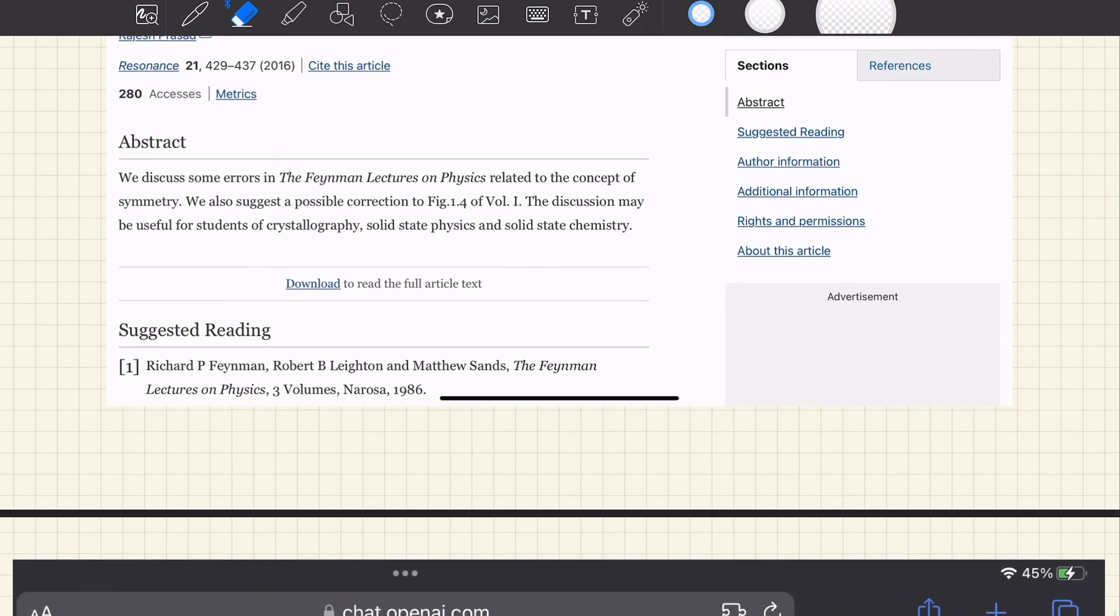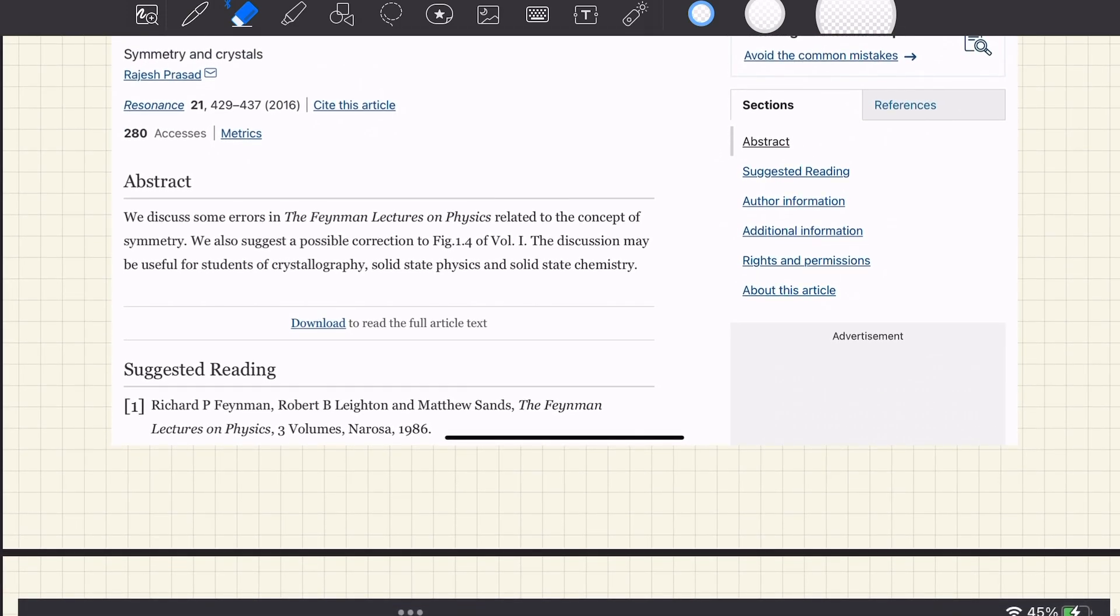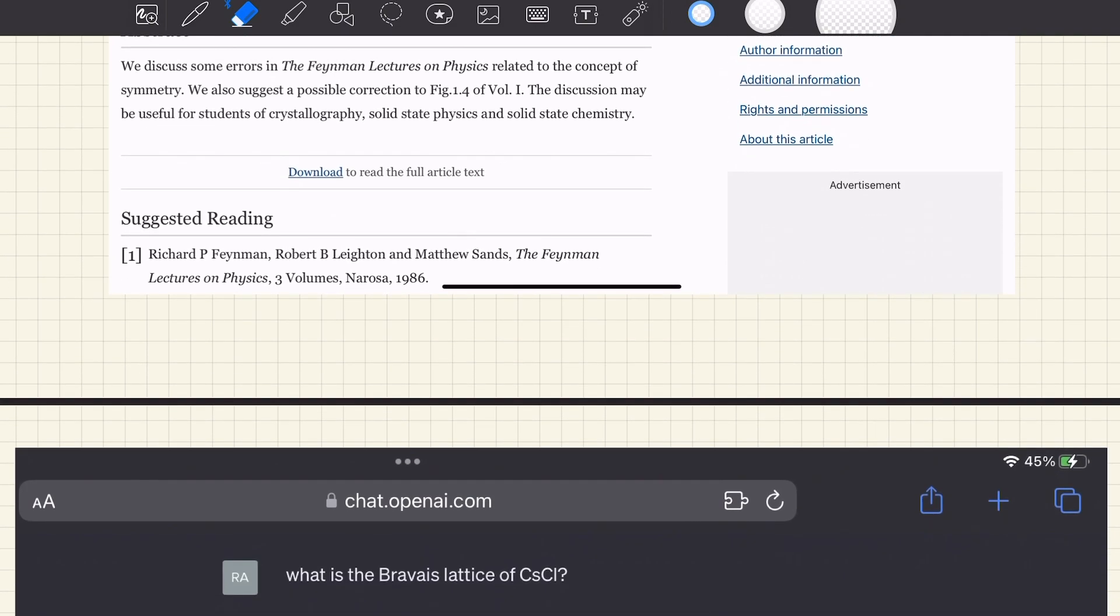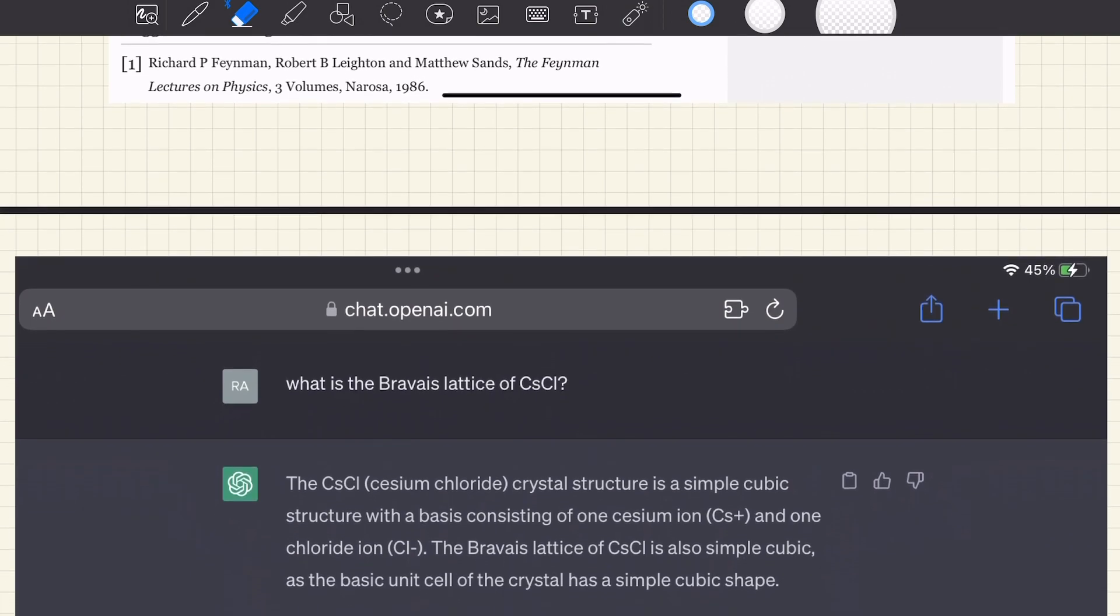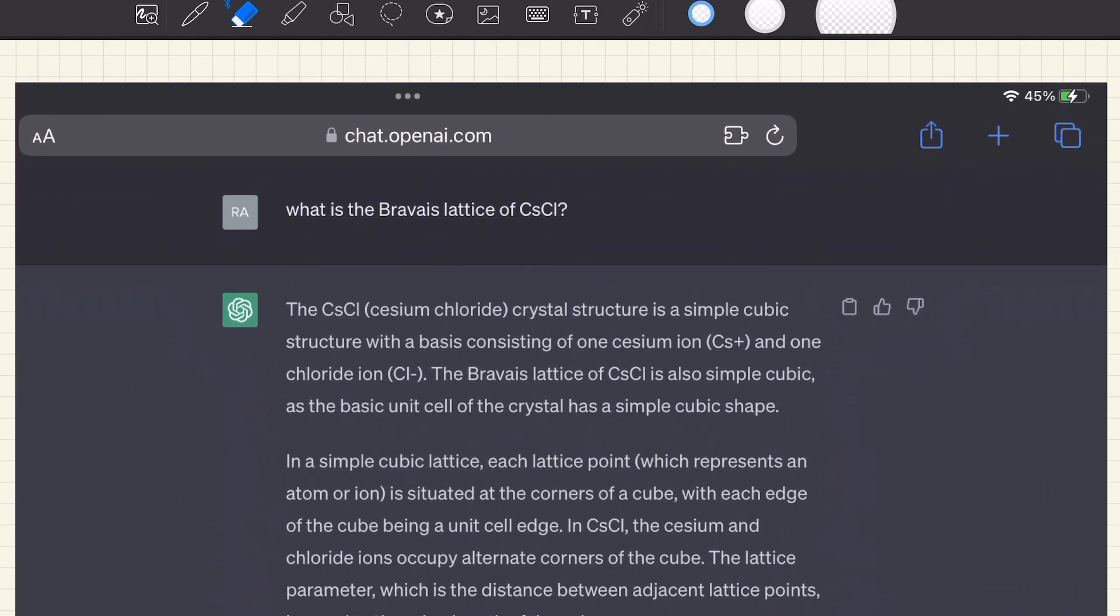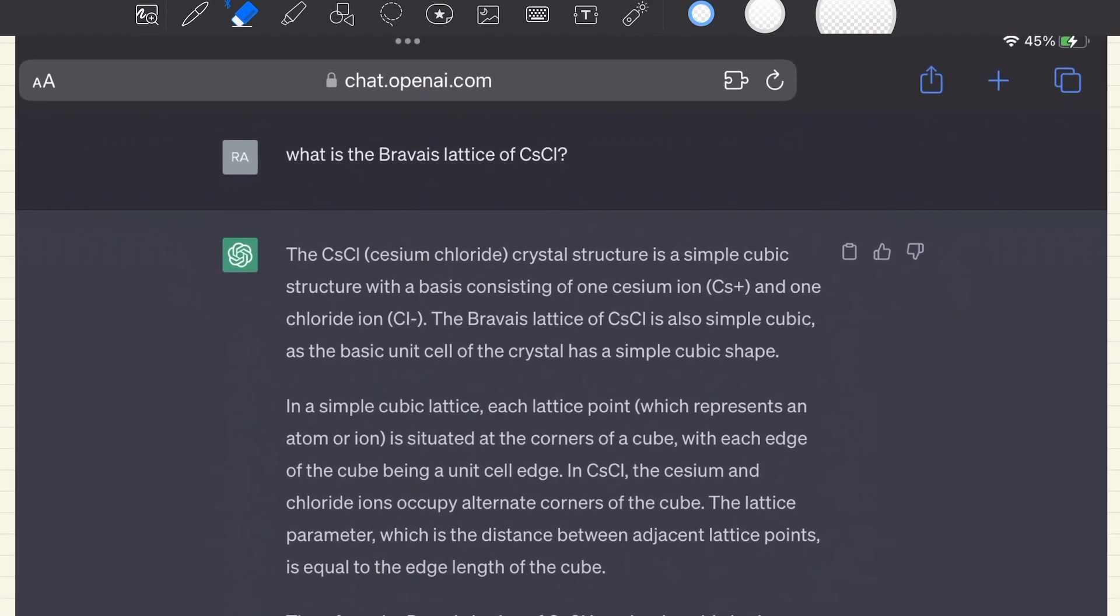Now let's put this question in a slightly different way. Instead of asking is cesium chloride BCC, I am now asking what is the Bravais lattice of cesium chloride? And surprisingly, this time ChatGPT gets it right.